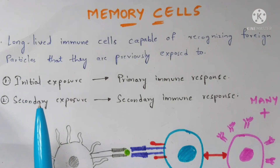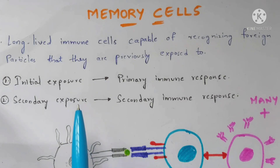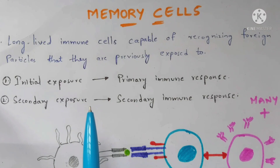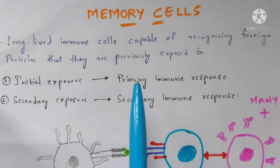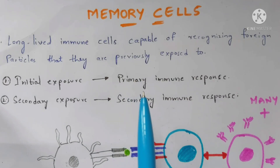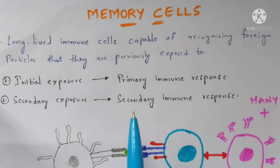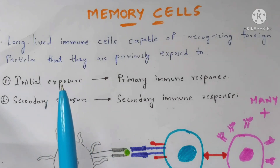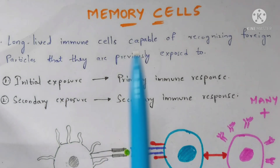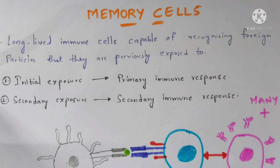In the case of secondary exposure, if the same type of antigens or pathogens enter into our body, then the memory cells take place and initiate the secondary immune response. Once the first immune response has taken place, memory cells are generated, and those memory cells participate in the secondary immune response. The duration of secondary exposure will be very less because of the presence of memory cells.